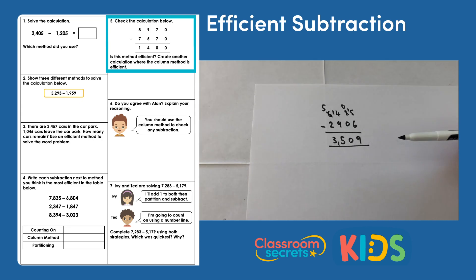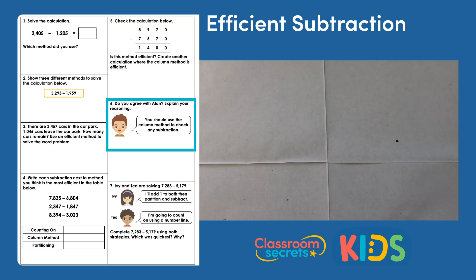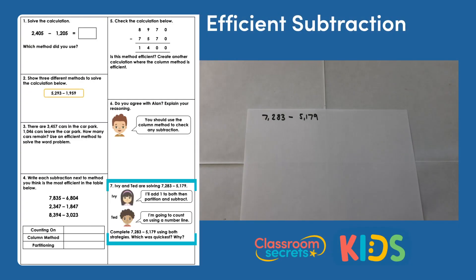You might have a different calculation — that's fine, as long as you've shown you needed to use the column method. Question six: do you agree with Alan? Alan says you should use the column method to check any subtraction. Your answers might differ, but I would say the column method is a specific type of subtraction — it doesn't just have to be used for checking. You might want to use it when two numbers can't be subtracted easily mentally or by counting on.